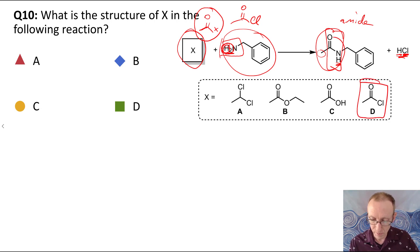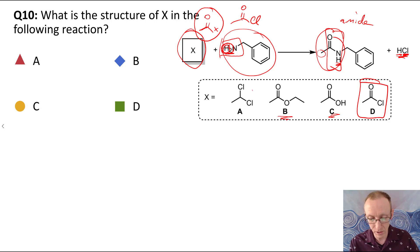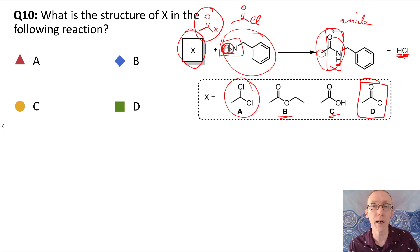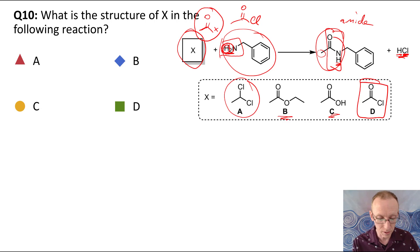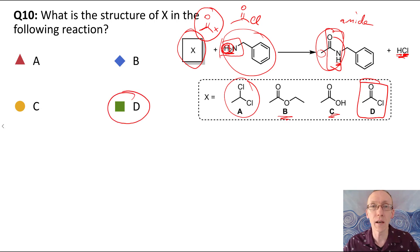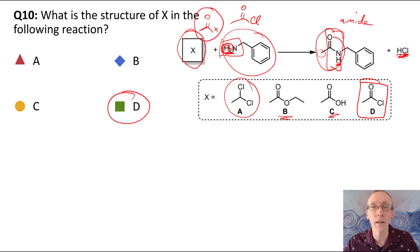It's not going to be the carboxylic acid, it's not going to be an ester, and it's certainly not going to be the dichloroalcohol compound. So the correct answer here is D — compound D, acetyl chloride.